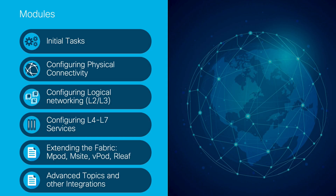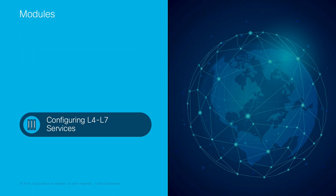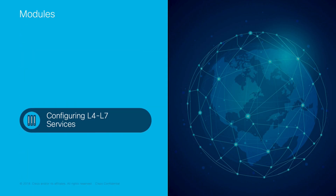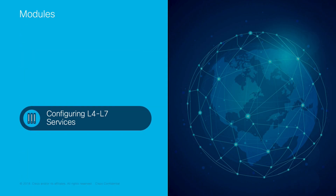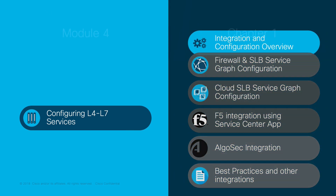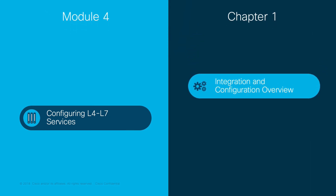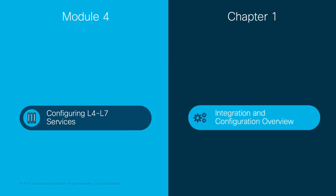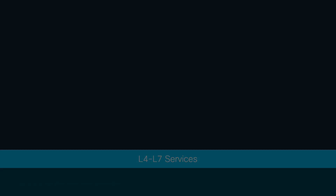Welcome to ACI, the Network Made Simple learning series. In this video, we will cover Module 4, Configuring Layer 4 to Layer 7 Services, Chapter 1: Integration and Configuration Overview.